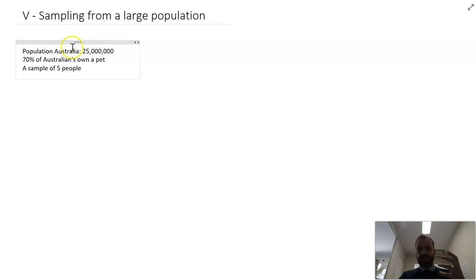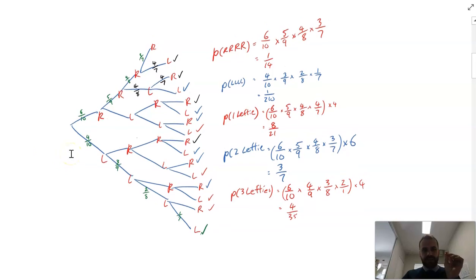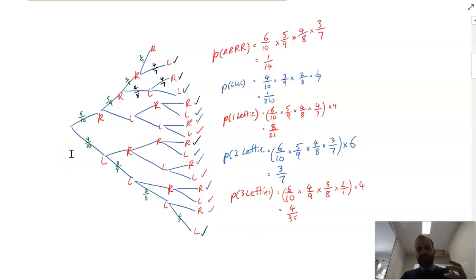Now in sampling from a small population what I did next was draw a tree diagram. This was from a previous video, a tree diagram of left and right handers, and importantly this tree diagram is without replacement because you're pulling out a person from a population of 10 and then obviously there's only nine people left to pick the next person and eight people to pick the next person.